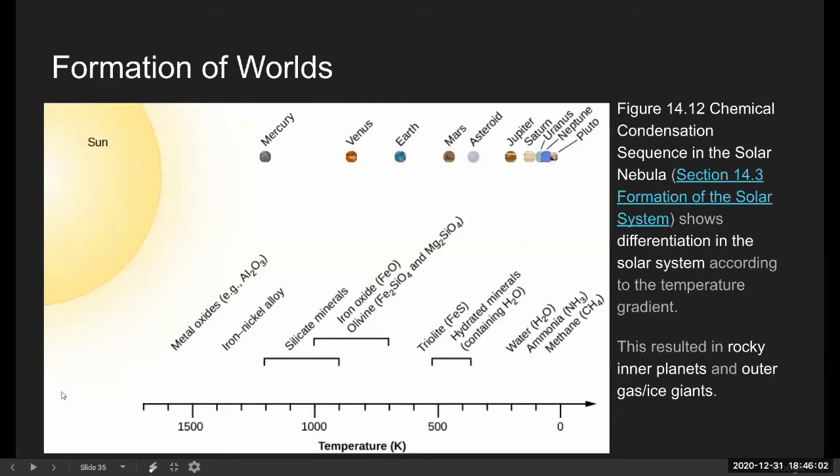So this is the differentiation that occurs on the solar system scale. And you mostly see it in the composition of the bodies. These inner four major planets are what we call terrestrial planets. It's a rocky planet made up of silicates and iron. And the outer four planets are what we call Jovian planets, or gas giants, or gas and ice giants.